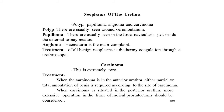Treatment of all benign neoplasms is diathermic coagulation through a urethroscope. The next point is carcinoma of the urethra — this is extremely rare. Profuse urethral discharge is the main symptom, often associated with urethritis. Later the discharge becomes blood-stained, and a tendency to bleed easily during instrumentation is very suspicious. Biopsy establishes the diagnosis.